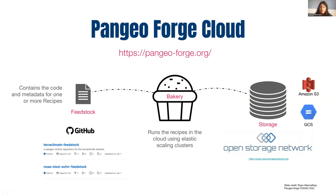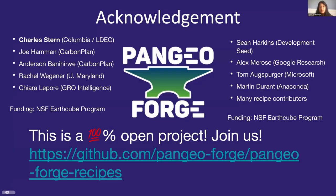The ARCO-friendly datasets are now written into storage — in our example, the Open Storage Network. Open Storage Network is several sites supporting object storage service, each NSF-funded, as a low-cost alternative to commercial cloud providers. You can also imagine writing your ARCO data sets to something like S3 or Google Cloud. We welcome you to join the Pangeo Forge community.